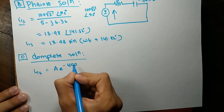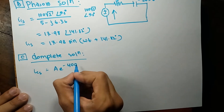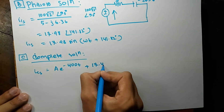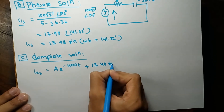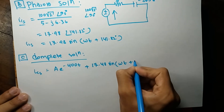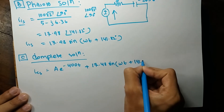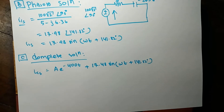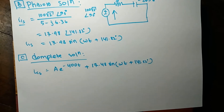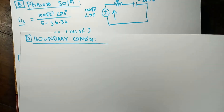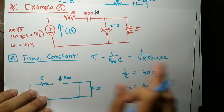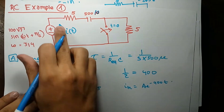The complete solution is I(t) = A·e^(−400t) + 70.48·sin(ωt + 141.82°). To apply the boundary condition, we need to know the current the source supplies at t equals zero, which requires knowing the initial condition of the capacitor.